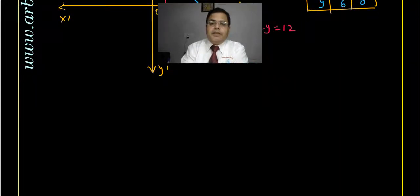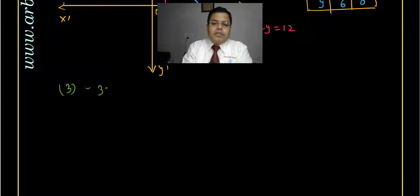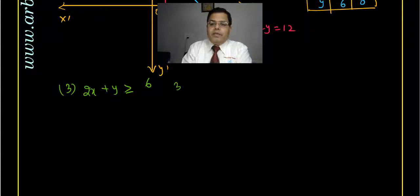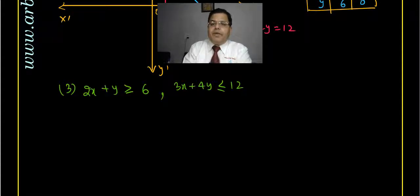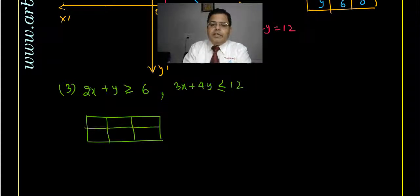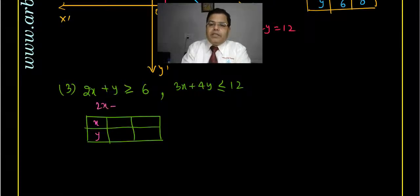Now the third question. The equations are: 2x + y ≥ 6 and 3x + 4y ≤ 12. We make a table for each. For 2x + y = 6: if y = 0 then x = 3, and if x = 0 then y = 6. For 3x + 4y = 12: if x = 0 then y = 3, and if y = 0 then x = 4.